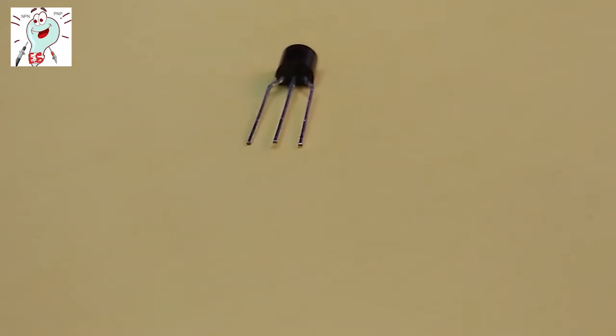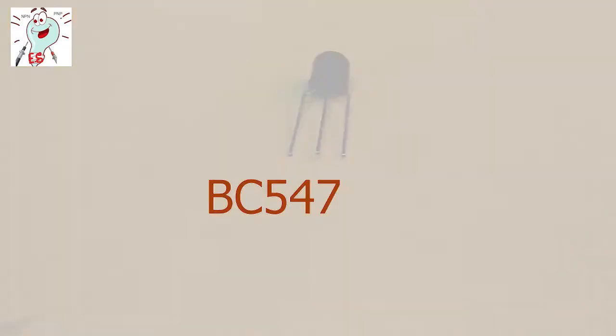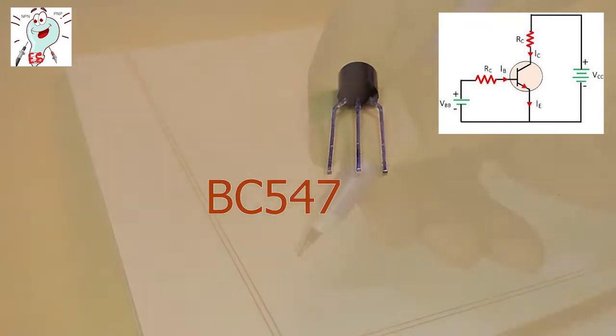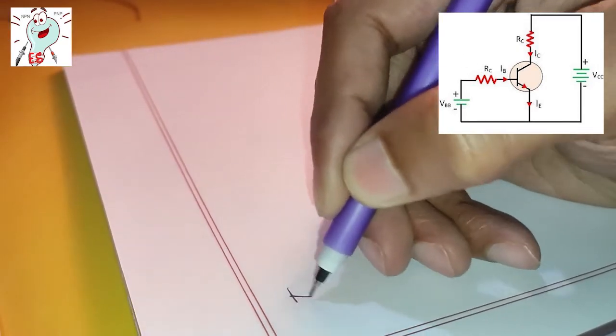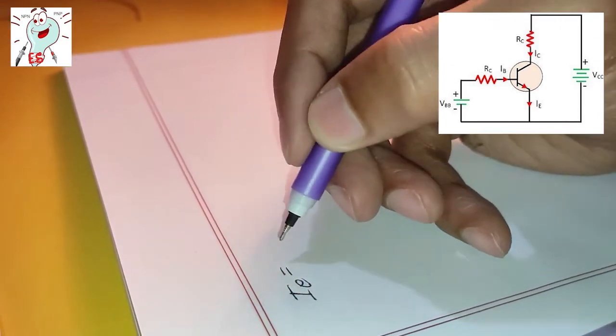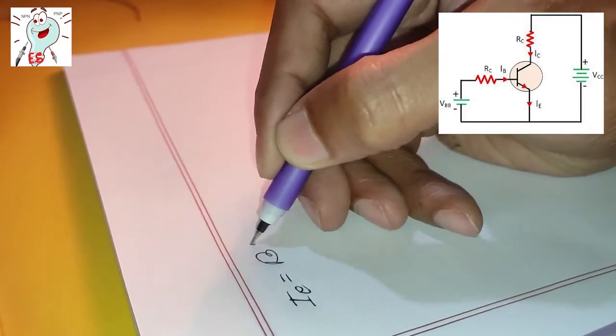This is an NPN transistor, so we have to connect positive supply to the base pin. The collector current IC is the product of base current IB and beta value.